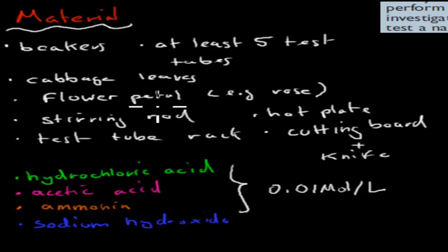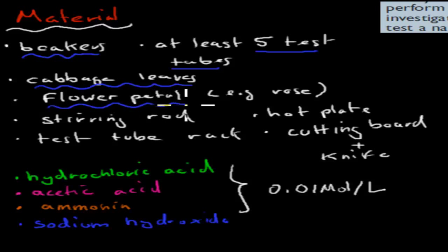For your materials, you would have had simple stuff like beakers, at least five test tubes, cabbage leaves or similar vegetables, flower petals such as rose, stirring rods, hot plates or Bunsen burners to warm up your beakers, a test tube rack, and a cutting board and knife to shred your cabbage and petals into smaller bits.